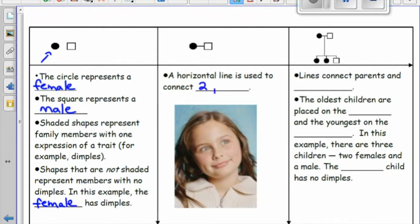A horizontal line is used to connect two parents. Lines connect parents and children.